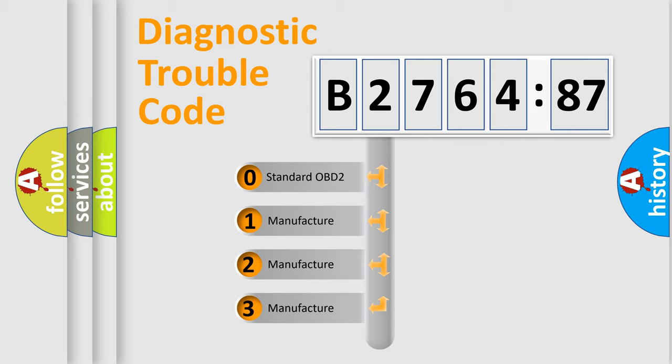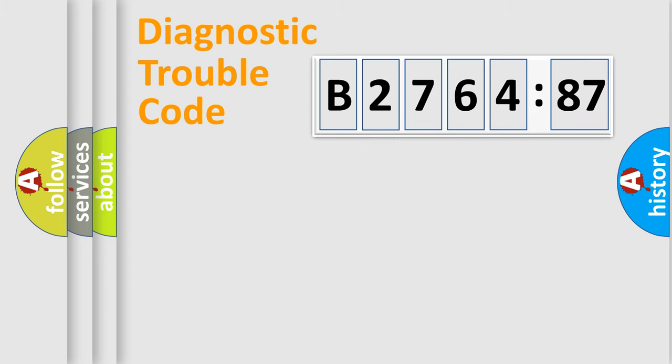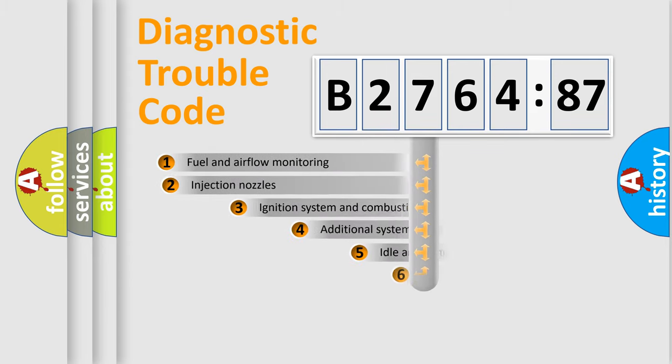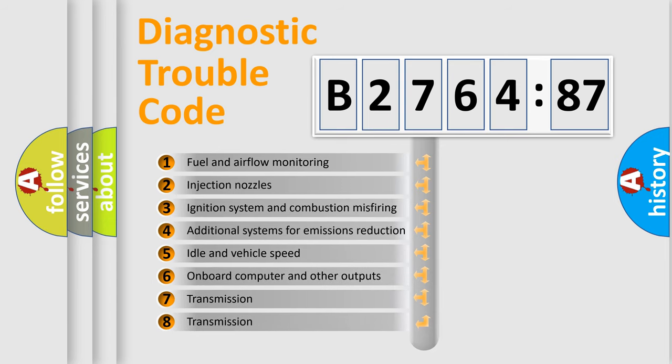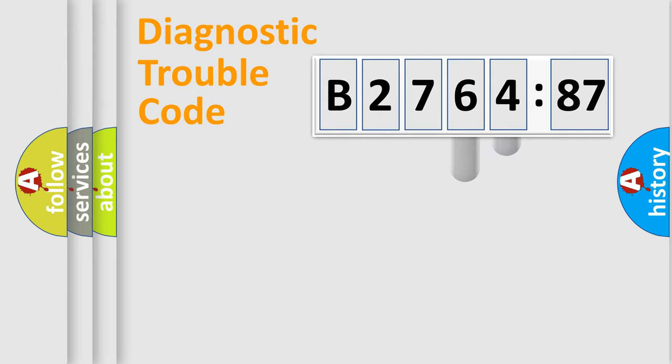This distribution is defined in the first character code. If the second character is expressed as zero, it is a standardized error. In the case of numbers 1, 2, or 3, it is a manufacturer-specific error. The third character specifies a subset of errors. The distribution shown is valid only for standardized DTC codes. Only the last two characters define the specific fault of the group.